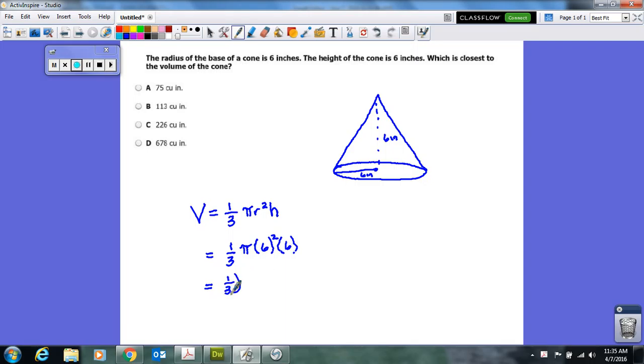I have one third being multiplied to 3.14. We'll round pi off a little bit there being multiplied to six squared. Six squared is six times six or 36, and then the last thing being multiplied by the six at the end, the height.